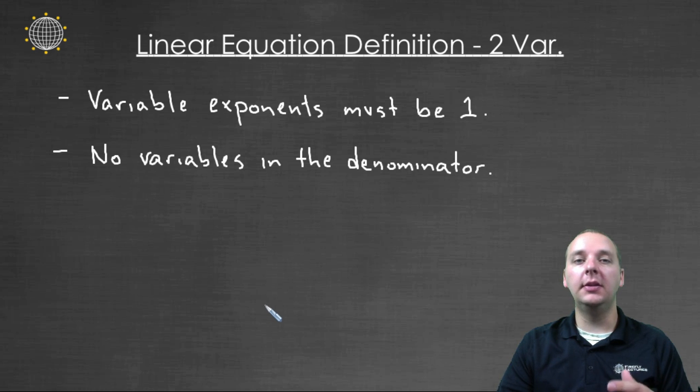Let's run through very briefly what it means to be a linear equation in two variables. Basically, number one, the variable exponents have to be the number one. You can't have any variable that's squared or cubed or anything like that.